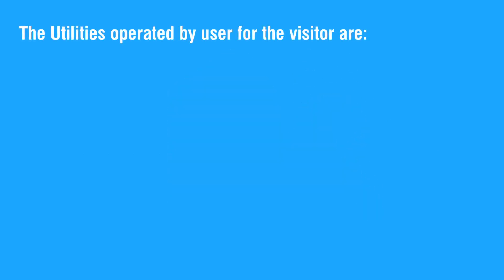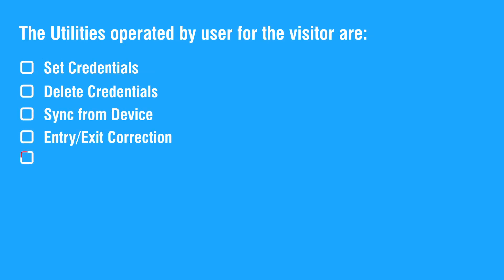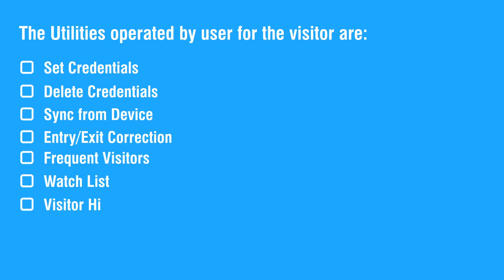The utilities operated by the user for the visitor are: set credentials, delete credentials, sync from device, entry or exit correction, frequent visitors, watchlist, visitor history, enrollment, and authorized host users.